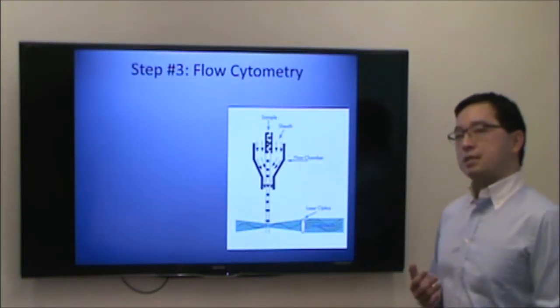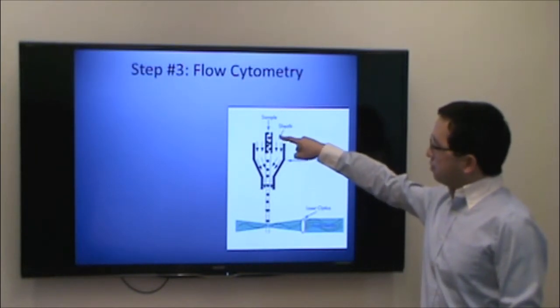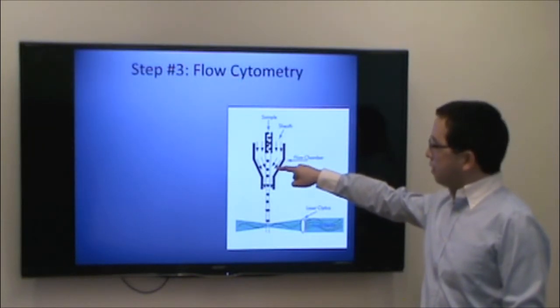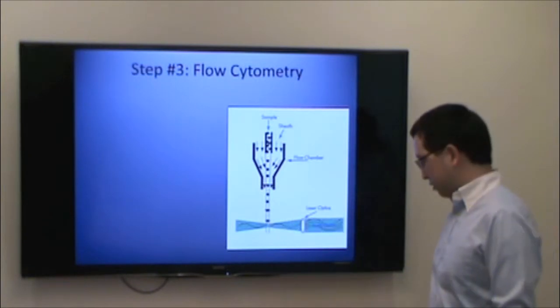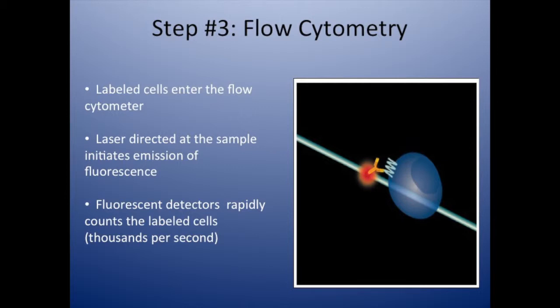The final step is to send the sample into the flow cytometer. The labeled sample is sucked in and cells enter the flow cytometer single file. Eventually each cell hits the laser, which leads to emission of fluorescence from the labeled antibody. Within the flow cytometer, there are fluorescent detectors that can rapidly count the cells at up to several thousand per second.